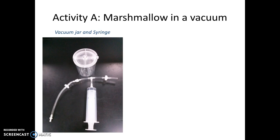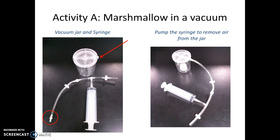In the first activity, Activity A, you're going to observe a marshmallow in a vacuum. A vacuum is a reduction in air pressure. To create a vacuum, you want to get this vacuum jar with a tubing and syringe — these will be together in a large Ziploc bag in the lab. Insert the end of the tubing with the plastic adapter into the opening on the side of the vacuum jar.